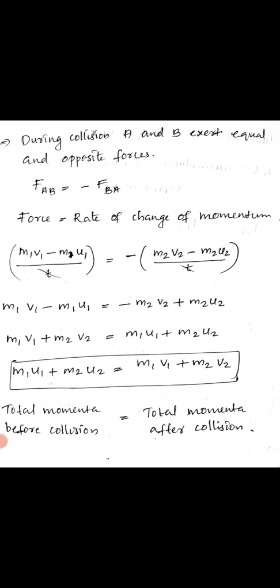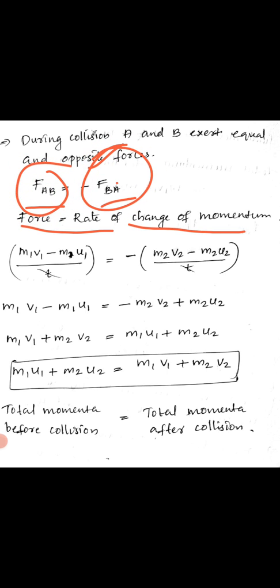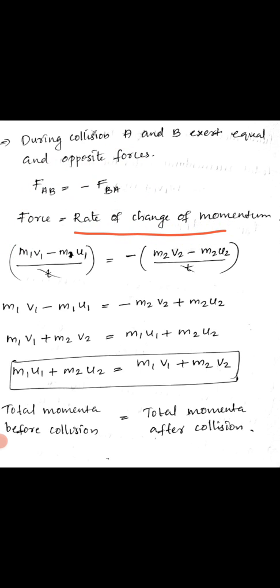The total momentum before the collision equals the total momentum when the collision occurs. During the collision, A and B exert equal and opposite forces on each other — force FAB and force FBA with a minus sign. Force is proportional to the rate of change of momentum, meaning F equals rate of change of momentum, i.e., F equals MA. We have one action force and one reaction force.